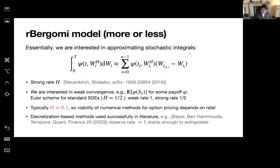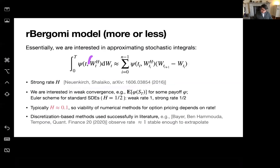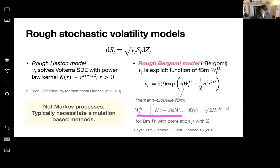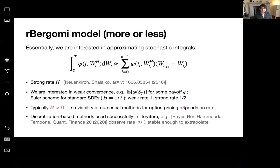The rate of convergence for the strong approximation is known to be rate H. I hesitate mildly because the referenced results use the standard rather than Riemann-Liouville fractional Brownian motion, but we believe the strong rate is H. A question from the audience: is there a relationship between W^H and the other W? Yes — using the same W in the definition. The strong rate being H is quite poor when H is tiny, as empirically observed.